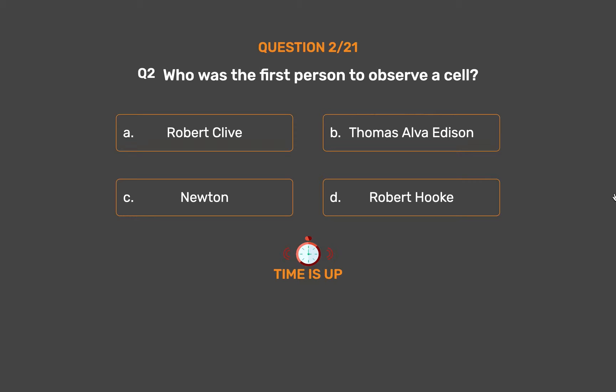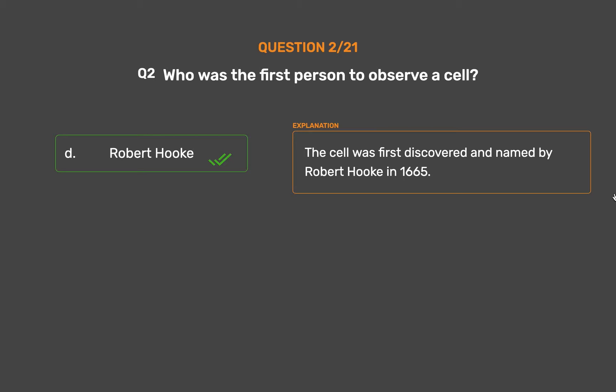The correct answer is Option D: Robert Hooke. The cell was first discovered and named by Robert Hooke in 1665.